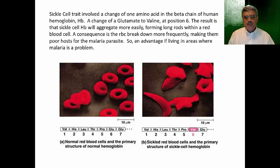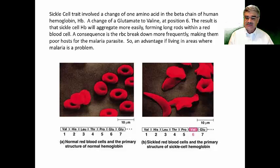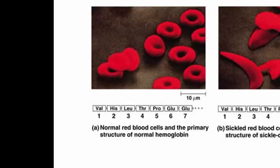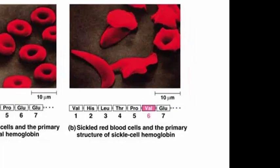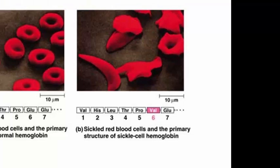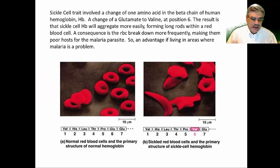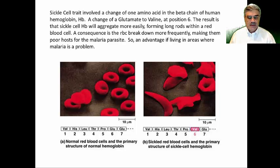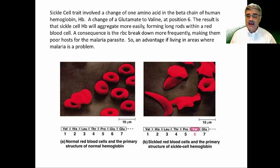The hemoglobin molecules in sickle cell trait tend to stack up on each other like a stack of plates, forming a very long cylinder. Hemoglobin is packaged inside red blood cells — on the left side of the slide are shown normal red blood cells, which are round with a little indentation. On the right side are shown sickle cells, which have these long stacks of hemoglobin inside. This is like sticking a baseball bat inside your backpack — it pokes out and bangs into doorways and walls, wearing out your backpack much more rapidly.